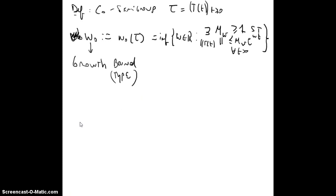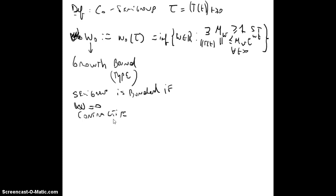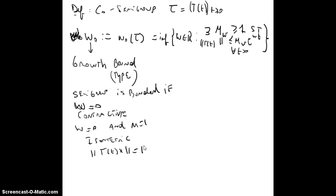We say the semigroup is bounded if we can take w = 0. It is contractive if w = 0 and M = 1 is achievable. Finally, the semigroup is isometric if T(t)x equals x for all x.